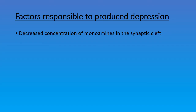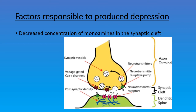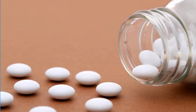At the biochemical level, a decreased concentration of monoamine neurotransmitters in the synaptic cleft leads to depression. Monoamine neurotransmitters include dopamine and noradrenaline as key examples.